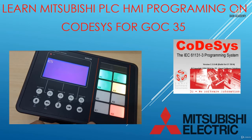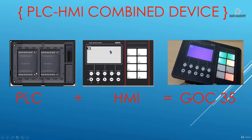In a single device — you can say it has a PLC which is the back part of this device. As you can see in this image, this is the back part of the device with inputs and outputs, and the front part is the HMI. So it's a combined device which has both PLC and HMI, and it is the GeoC35.